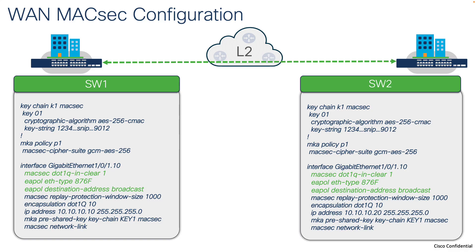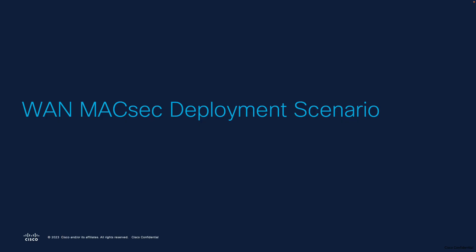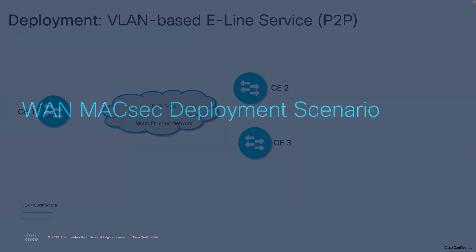Once that is done, we enable MACsec on the interface and reference the policy and shared key chain configured earlier. The things that change specifically for WAN MACsec are the enhancements we discussed: the capability to have the 802.1Q tag in clear, the capability to change the E-POL destination address to broadcast, and the capability to change the EtherType to 0x876F or a custom value to ensure packets pass through provider bridges.